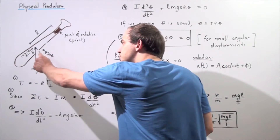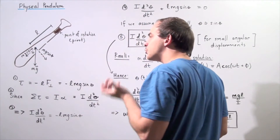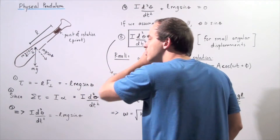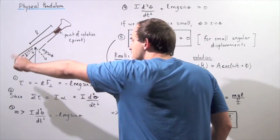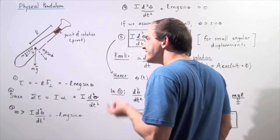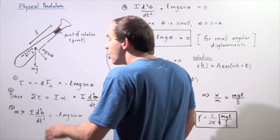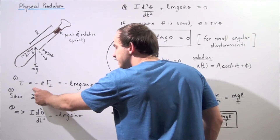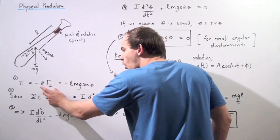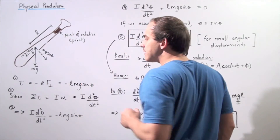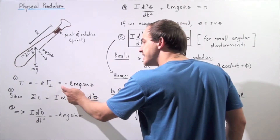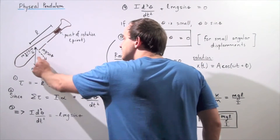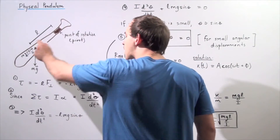The force mg sine of angle theta is the component that creates a torque, and that torque propels the object and allows it to experience angular motion, displacing the object along its oscillatory pathway. The torque is given by negative — we choose negative for this direction — the lever arm multiplied by the force acting perpendicular to it: negative L times mg sine of theta.